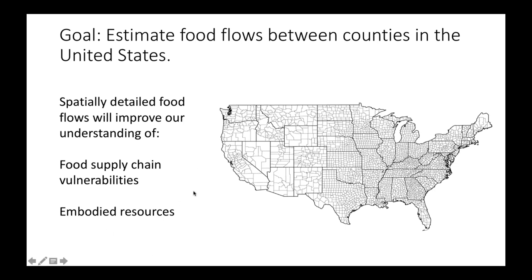This would be a very detailed spatial mapping of food flows within one country. Second, having this detailed spatial mapping would help improve our understanding of the resources embodied in the food supply chain. Agriculture is really a dominant user of natural resources — it's the main consumptive user of water within the US and globally, emits a lot of carbon, and has a lot of nutrients embodied in agricultural production. In order to accurately trace those resource footprints through the food supply chain, we basically need to know where food is originating and where it's going.